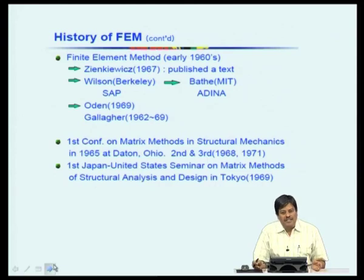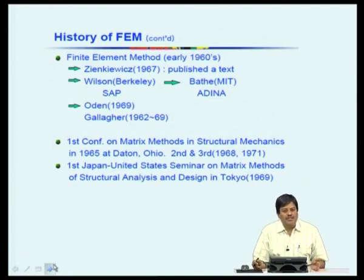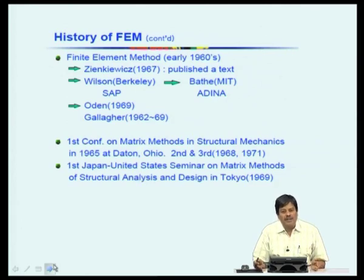Since then, rapid advances were made and the first book was published in 1967 by Zienkiewicz. Many pioneering works in this area were made by Zienkiewicz, Wilson, Oden, Gallagher, and many others. Many commercial packages emerged from their work. The first conference on FEM was organized in 1965 and in Asia, a Japan-United States seminar was organized in 1969. Since then, rapid progress has been made and FEM has become a design and analysis tool for many areas of engineering and science.